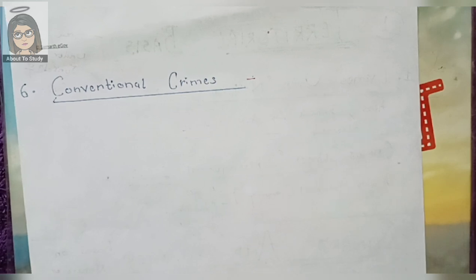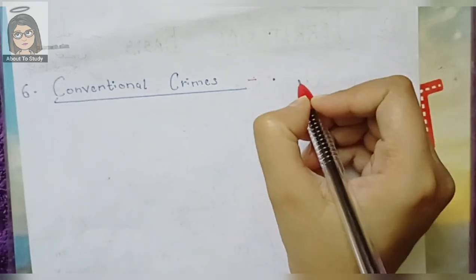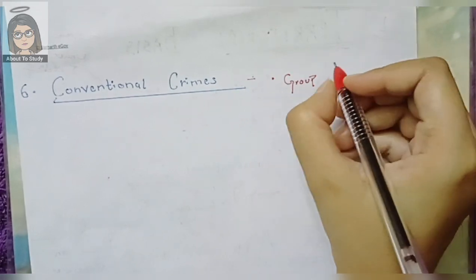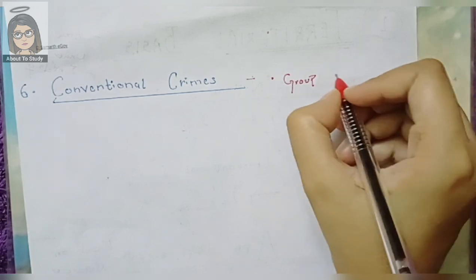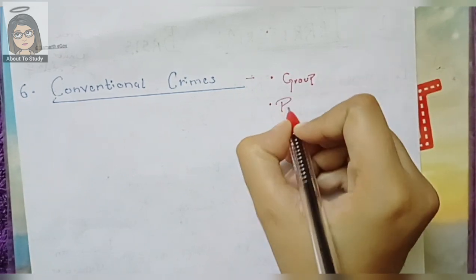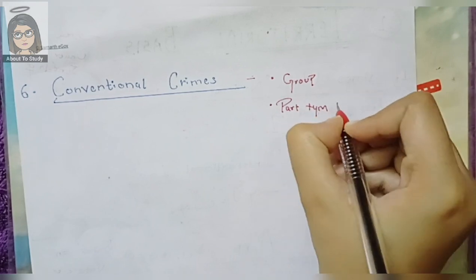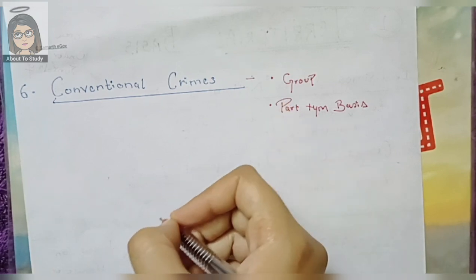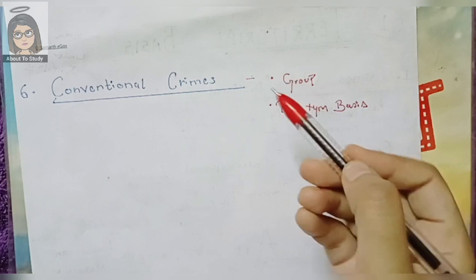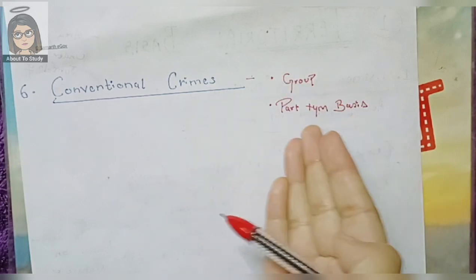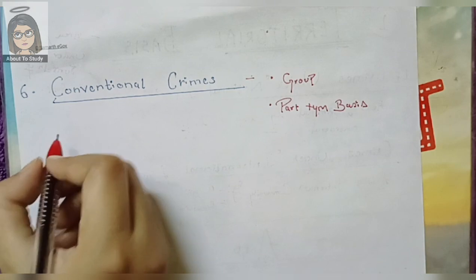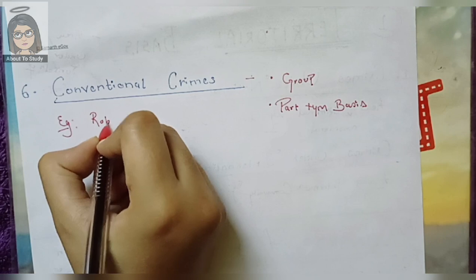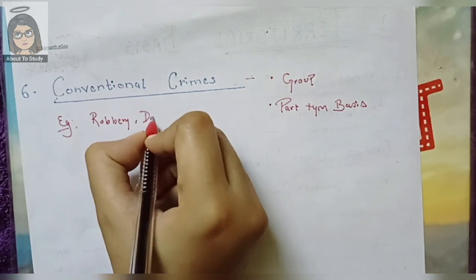The next category is conventional crime. Mostly groups are committed to committing conventional crime — they are committed by groups on a part-time basis. Part-time means they are doing crime as a side activity alongside another job. Robbery is the example — it is committed by a group targeting a victim. Theft also falls under this category. These are part-time criminals.